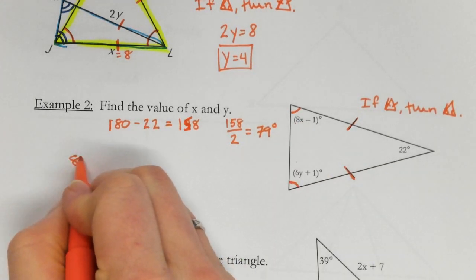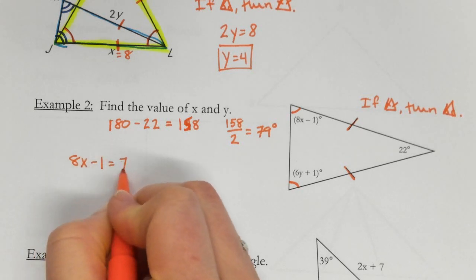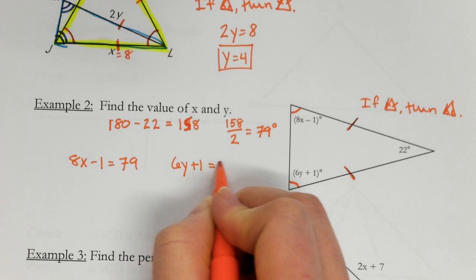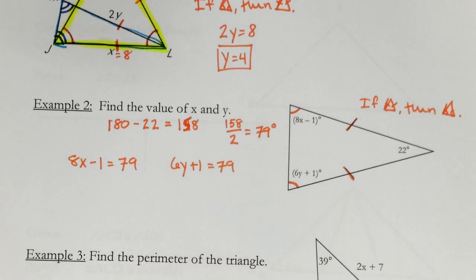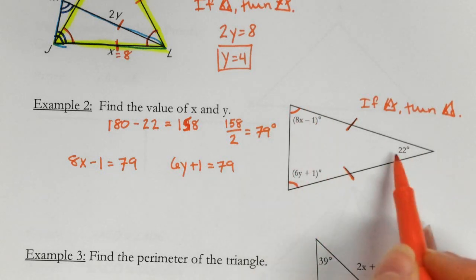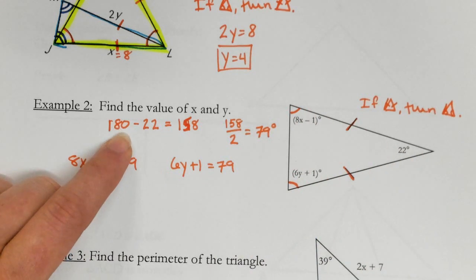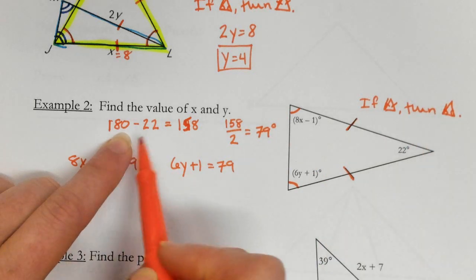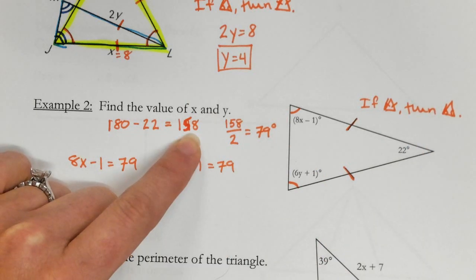So now I know that 8x minus 1 equals 79, and I also know that 6y plus 1 equals 79. So let me explain that again. So I have all three angles add up to 180. That's where I got that from. If I'm going to get rid of this angle, so get rid of the 22, I need to subtract 22 to get 158.